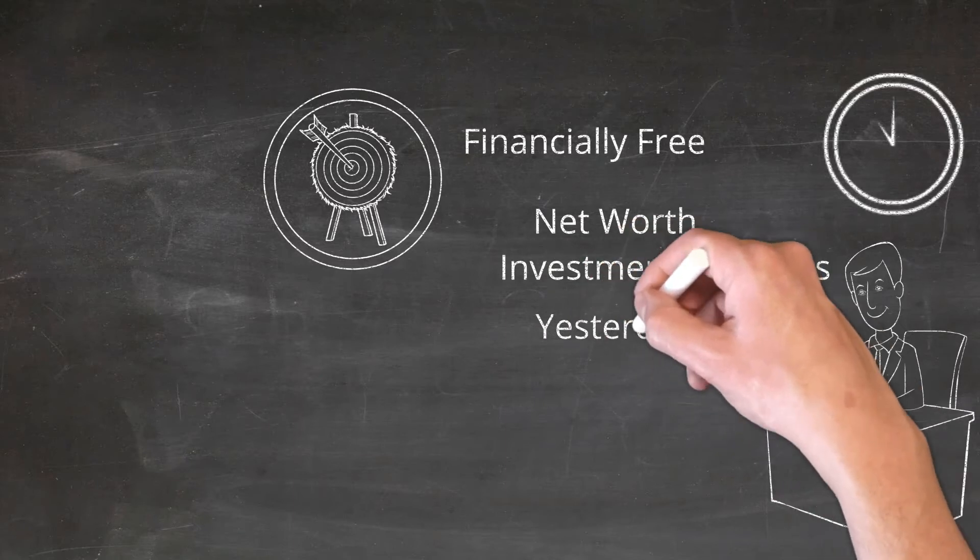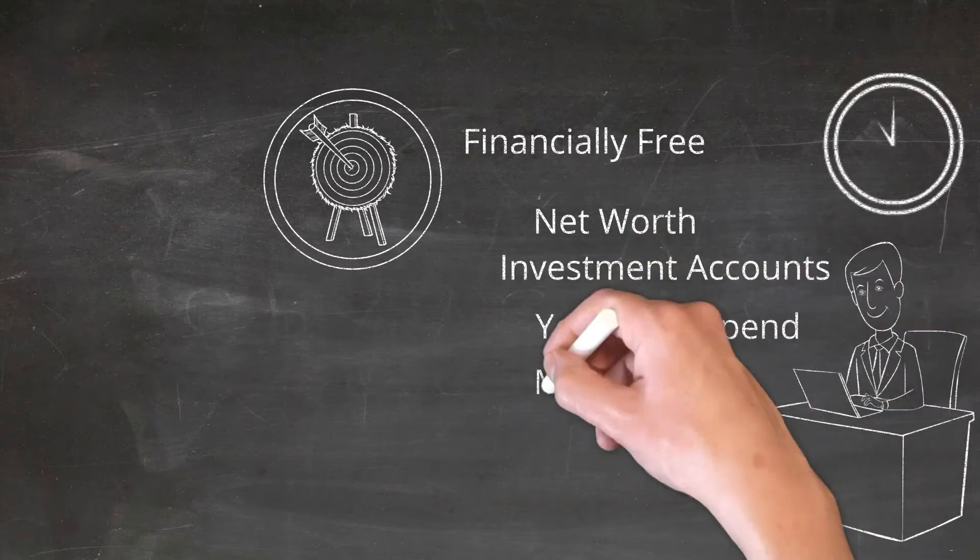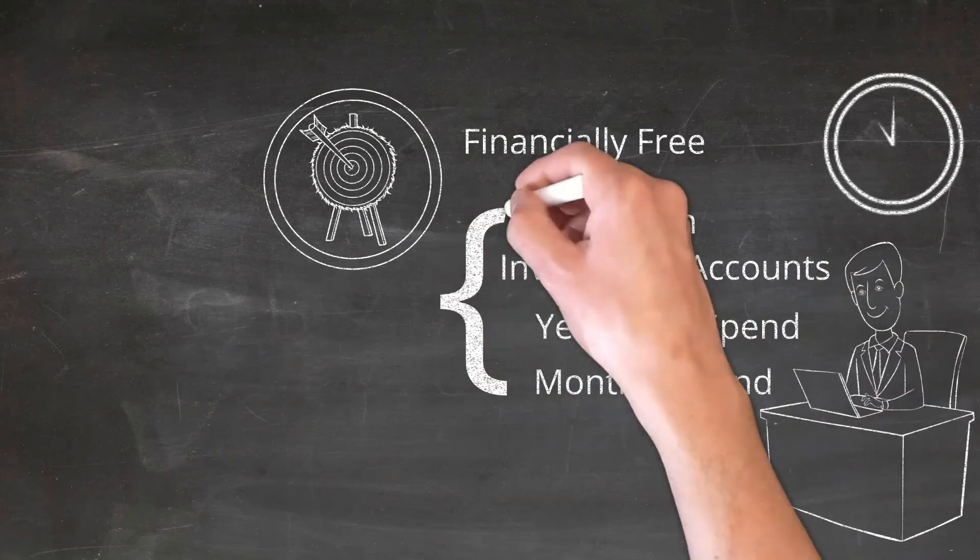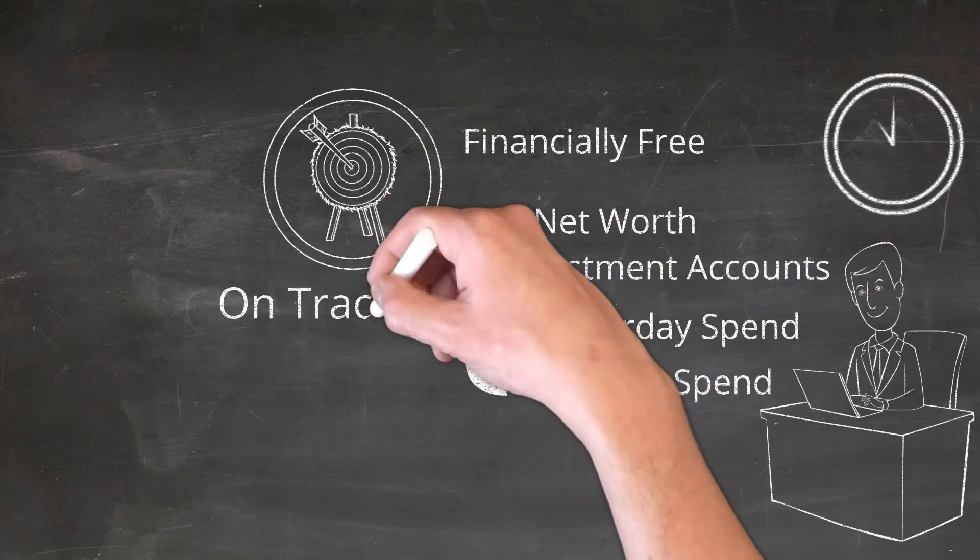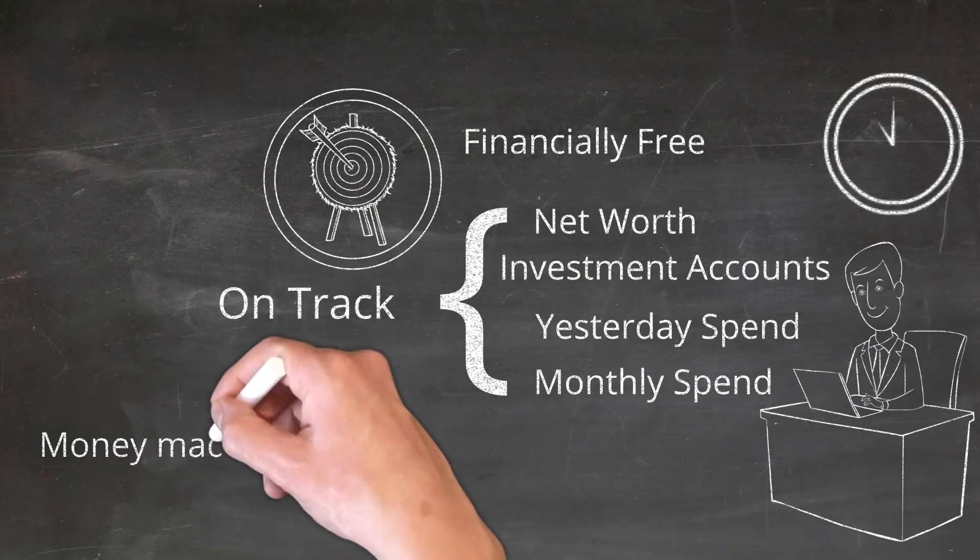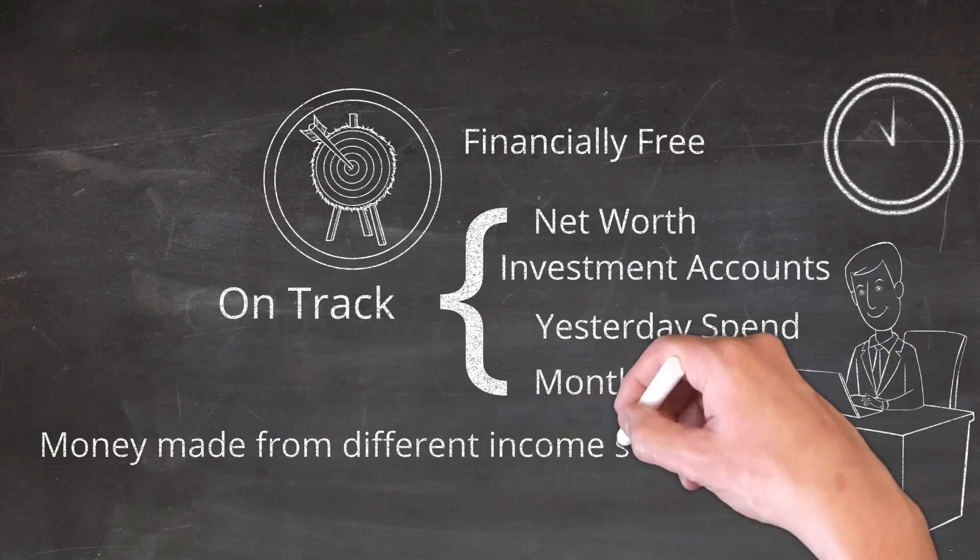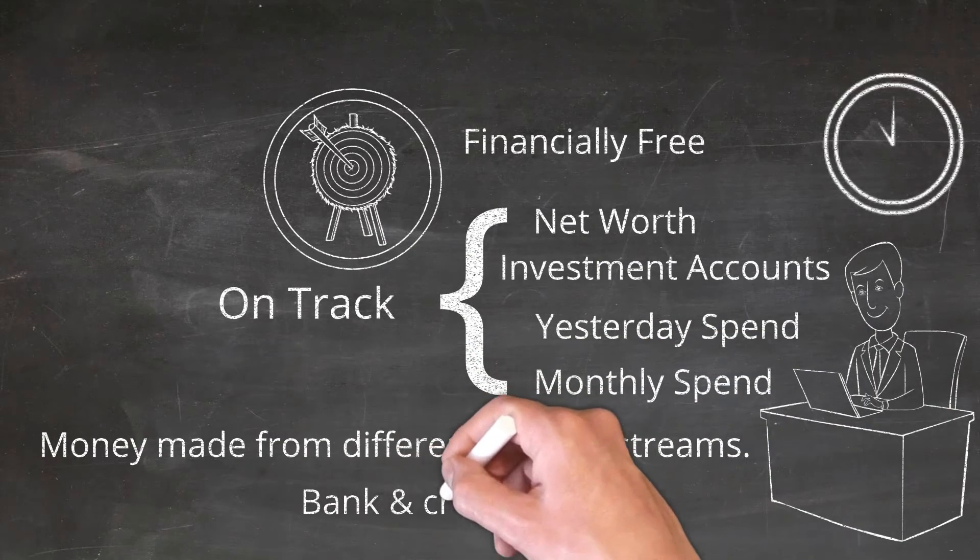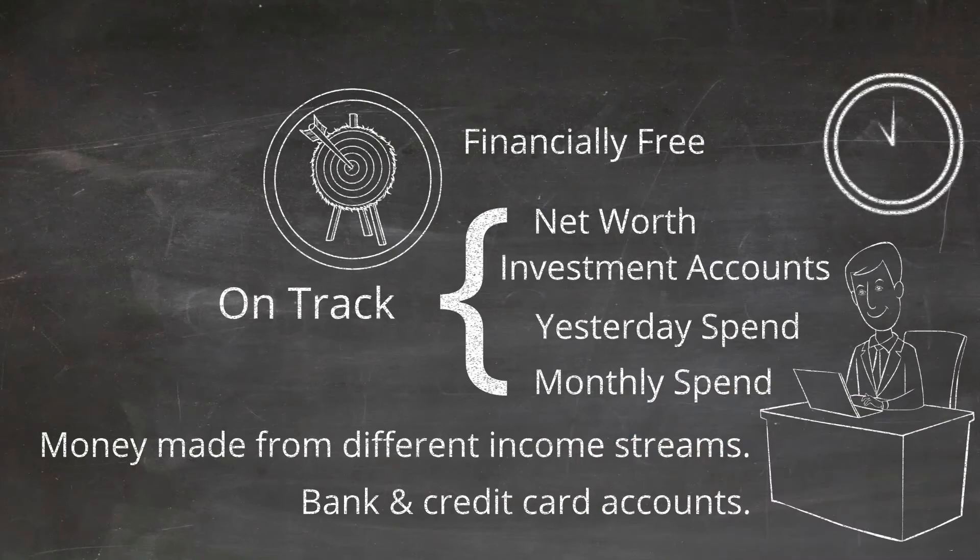You'll also want to see how much you spent yesterday and how much you've spent so far in that month. That way, you can be sure you're on track. Plus, you'll want to check out how much money you've made from all of your different income streams. Lastly, you will want to check your bank and credit card accounts.